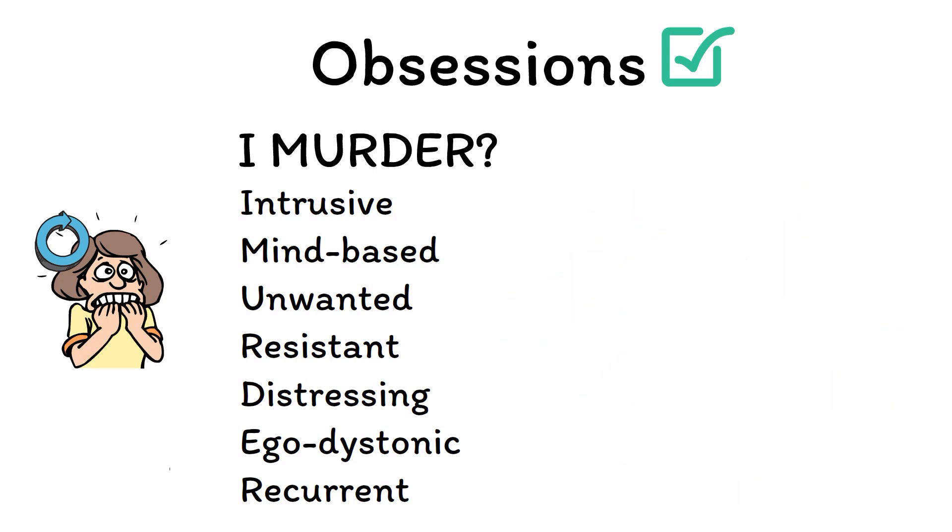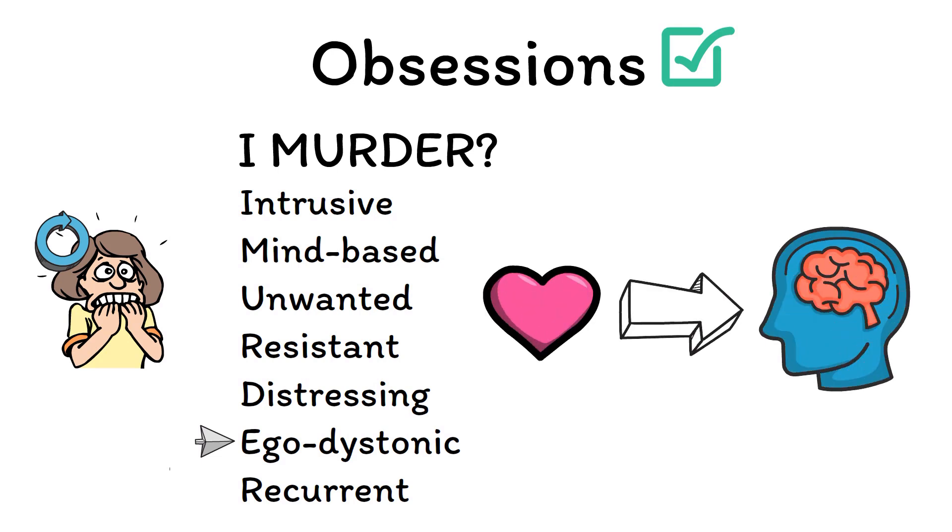Next, obsessive thoughts are ego-dystonic, meaning that someone with these thoughts is generally able to recognize that, despite being based in their own mind, these intrusive thoughts are not reflective of their true desires. The word ego-dystonic is used to describe this pattern as they are discordant with someone's self-concept or their ego in psychiatric jargon.